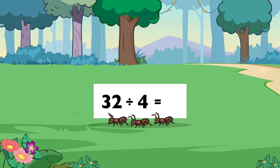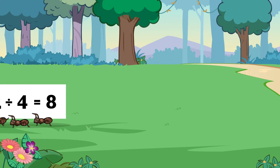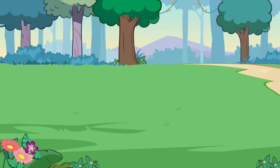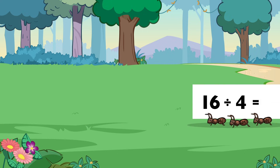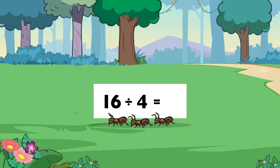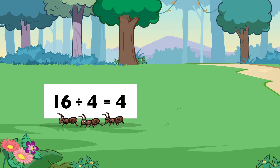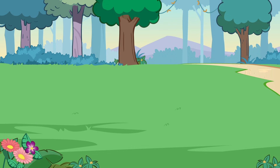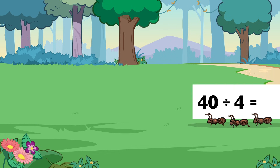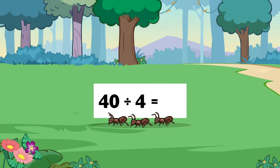Thirty-two divided by four equals eight. Sixteen divided by four equals four. Forty divided by four equals ten.